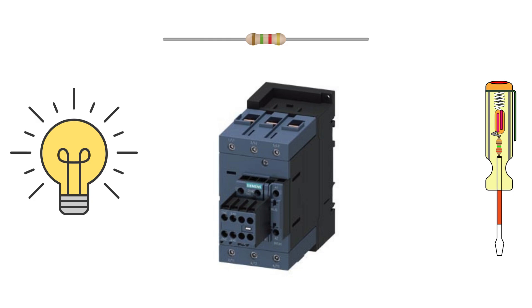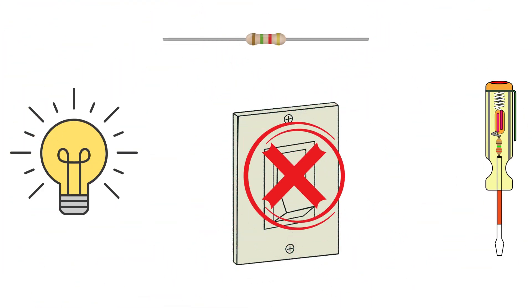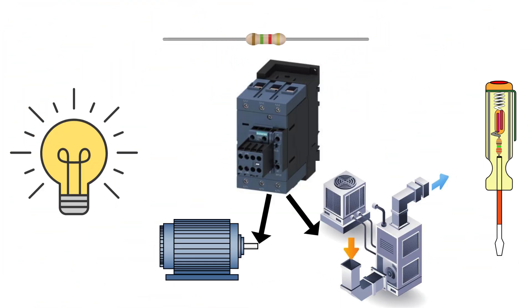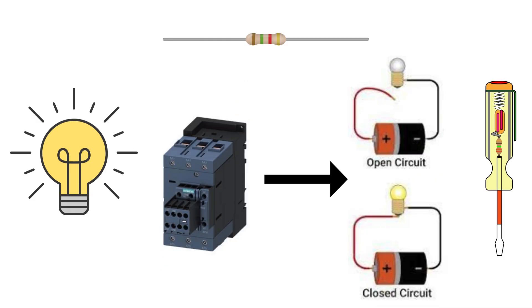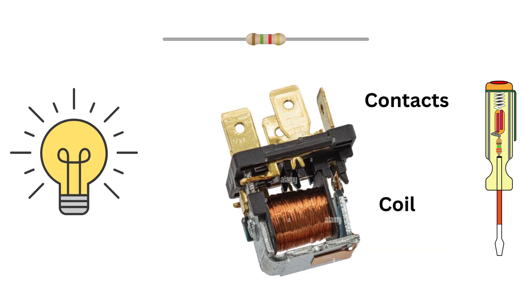Let's kick things off with the basics. What is an electrical contactor? Well, think of it as a special kind of switch that controls the flow of electricity to a device or machine. But here's the catch — it's not your typical light switch. A contactor can handle a lot more current and can control devices that require high power, like motors or HVAC systems. A contactor is essentially a device that opens and closes electrical circuits. It has two main parts: the coil and the contacts. The coil is like the brain of the contactor. When you send electricity to the coil, it generates a magnetic field and pulls the contacts together, which closes the circuit and allows power to flow to whatever you are controlling.